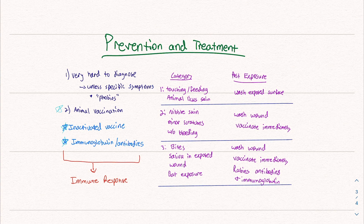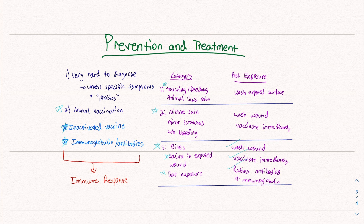Category one: when you're touching or feeding an animal, or they lick you, wash your hands. Anytime you handle an animal, wash your hands. Number two: if the animal nibbles your skin or you get a minor scratch without bleeding, wash the wound and vaccinate yourself immediately — this is for animals that don't have a rabies vaccine. Number three: if you get bitten by an animal that has rabies and the saliva gets into your wound, or if you get bit by a bat, wash the wound, get a vaccine immediately, and get the antibodies and immunoglobulin. If you come into close contact, get vaccinated immediately, and if it's bad enough, get that extra help from those antibodies.